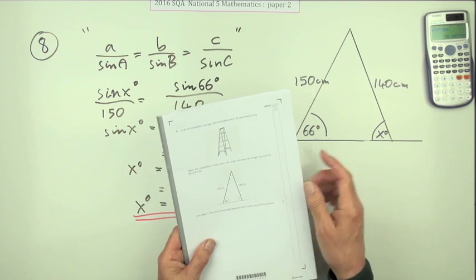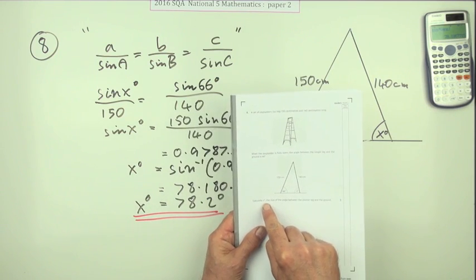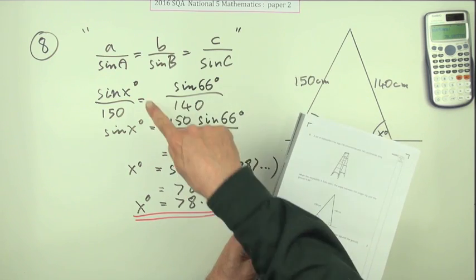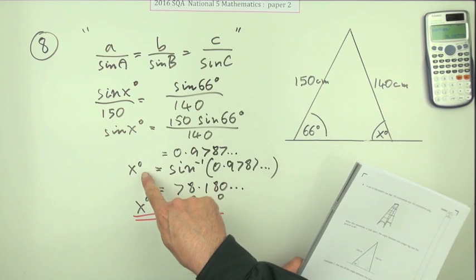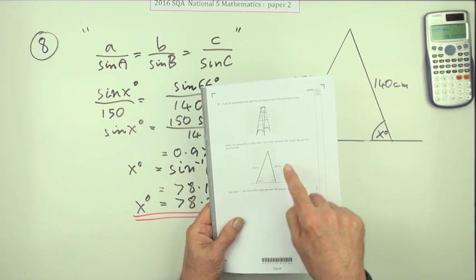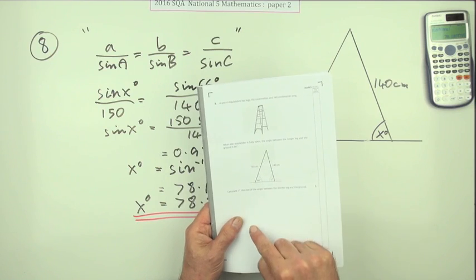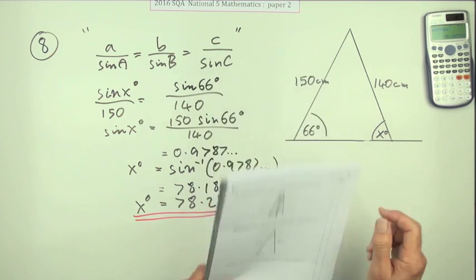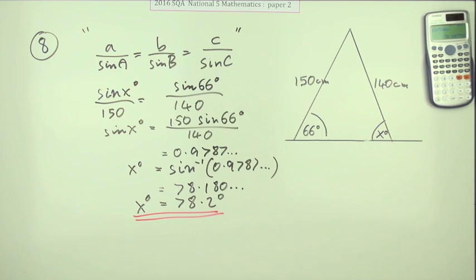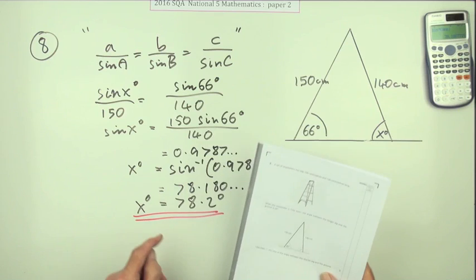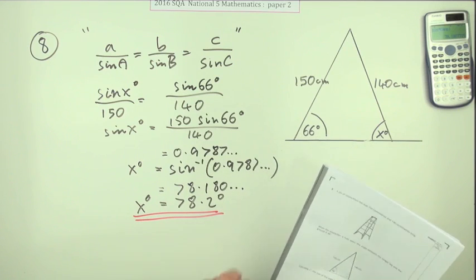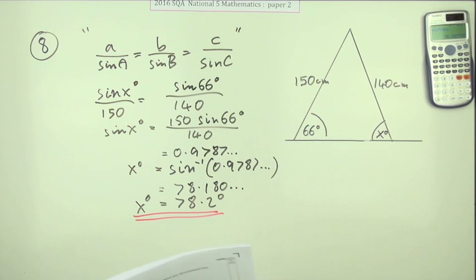And the only reason I kept it in was, notice it said calculate X with a little degree sign on it. Which is a bit of a pest keeping it because you probably didn't bother after here. But strictly speaking, according to this, if it's X degrees, then X is just a number. So that X would just be the 78.2. So that's why they've said X degrees. So you can put a degree sign in as well.